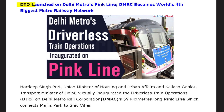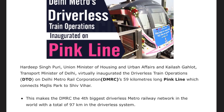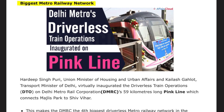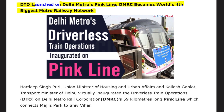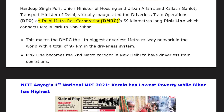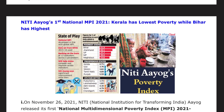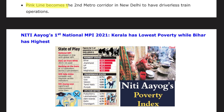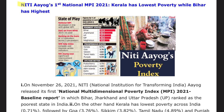Delhi Metro launched driverless train operations (DTO) on the pink line. DMRC became the world's fourth biggest metro railway network. The pink line also became the second metro corridor in New Delhi to have driverless operations.